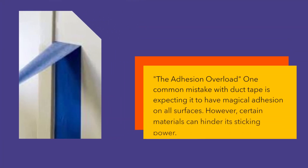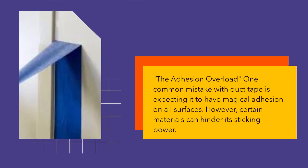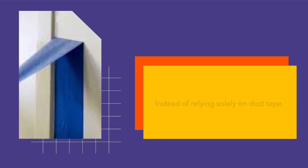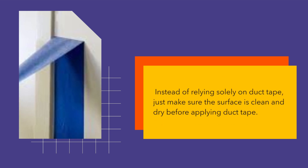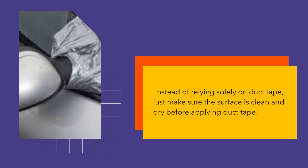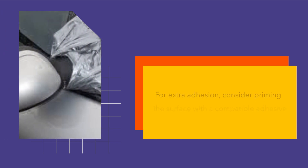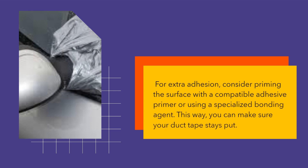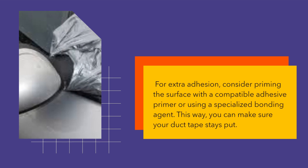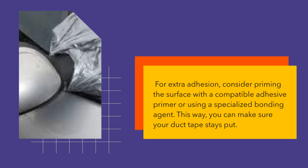The adhesion overload. One common mistake with duct tape is expecting it to have magical adhesion on all surfaces. However, certain materials can hinder its sticking power. Instead of relying solely on duct tape, make sure the surface is clean and dry before applying. For extra adhesion, consider priming the surface with a compatible adhesive primer or using a specialized bonding agent. This way, you can make sure your duct tape stays put.